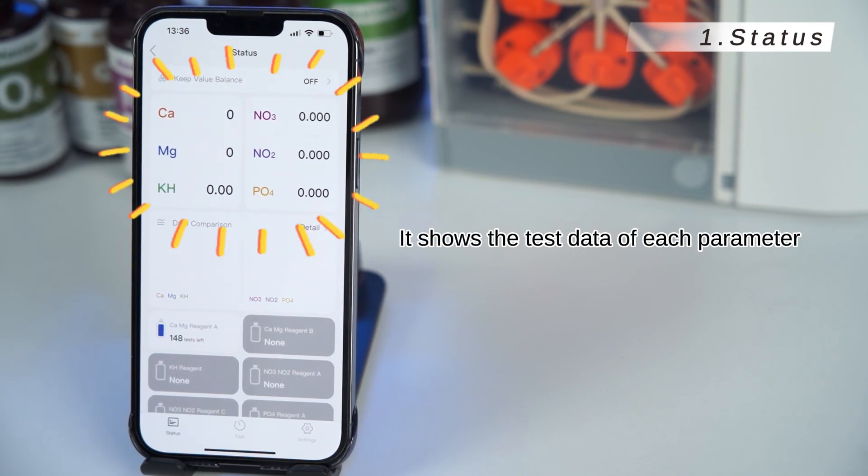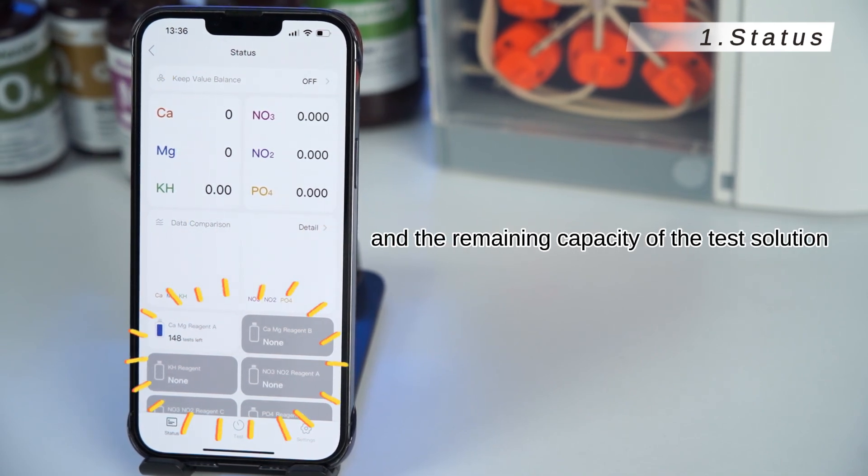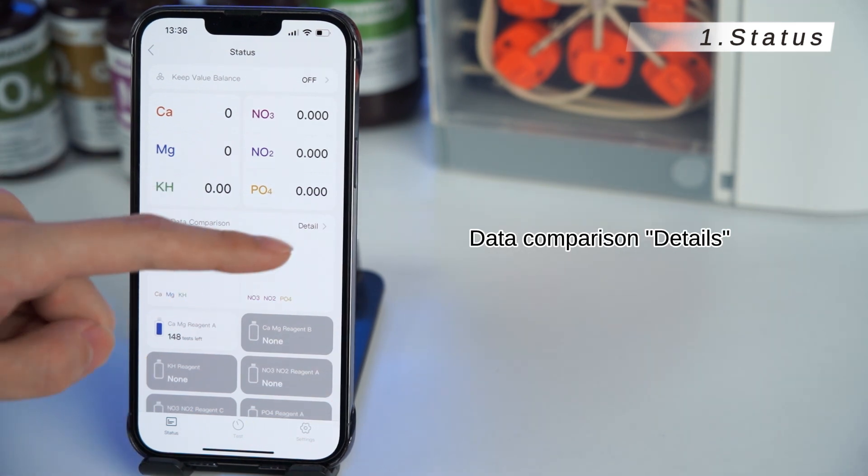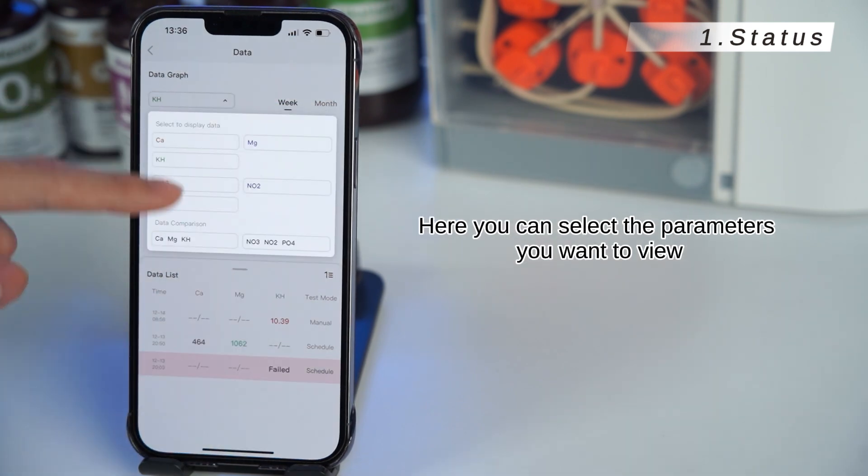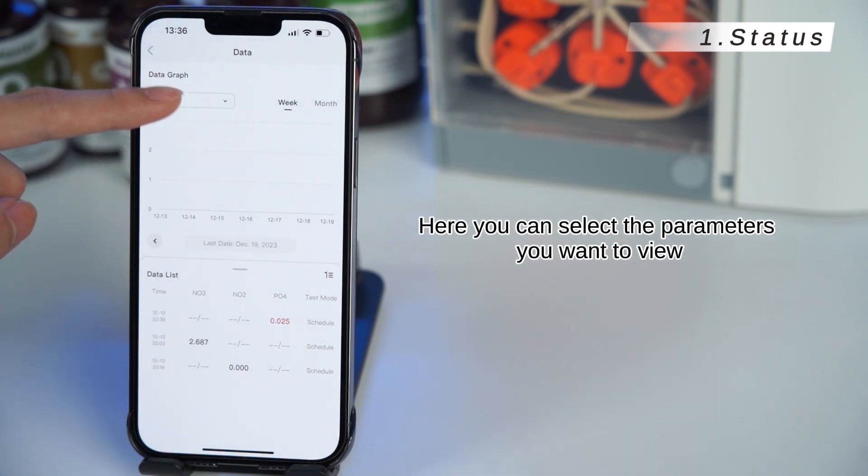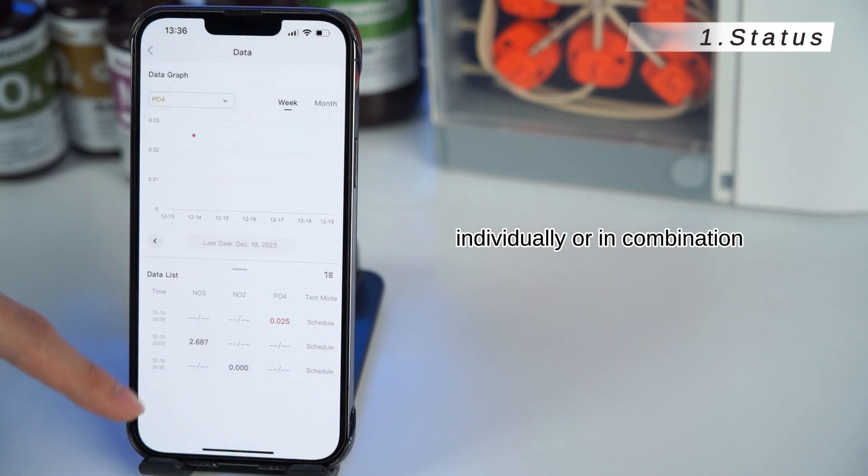It shows the test data of each parameter and the remaining capacity of the test solution. Data Comparison Details. Click to view the detection history data in week or month. Here you can select the parameters you want to view, individually or in combination.